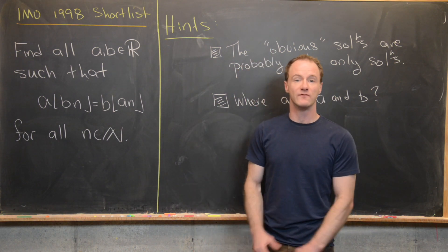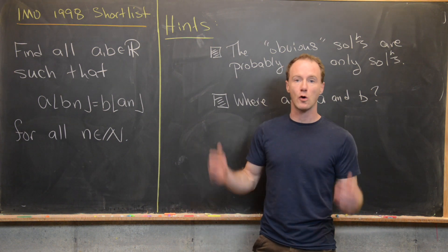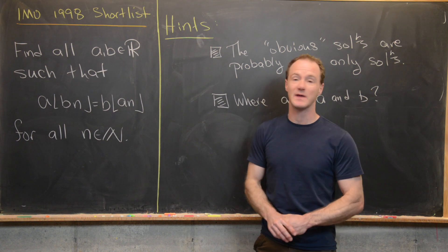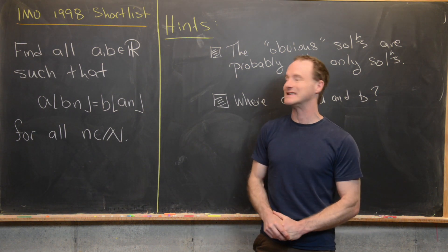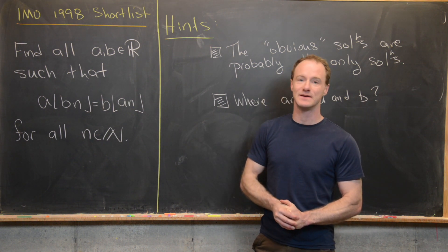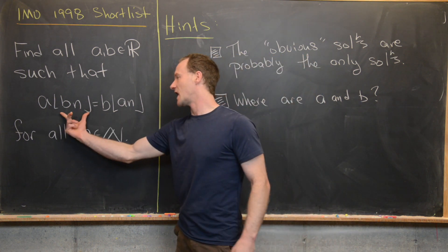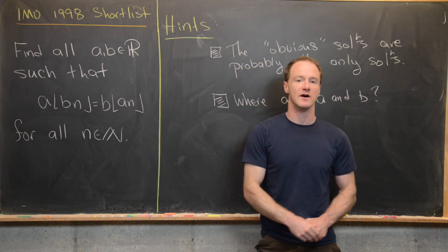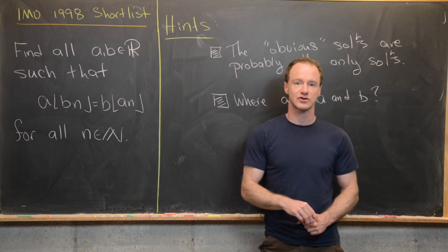Here we're going to look at a nice problem involving the floor function. I've got a whole playlist of problems involving the floor function. This one comes from the International Math Olympiad shortlist, year 1998. Our goal is to find all real numbers A and B satisfying the equation: A times the floor of B·N equals B times the floor of A·N, and this needs to be true for all natural numbers N.